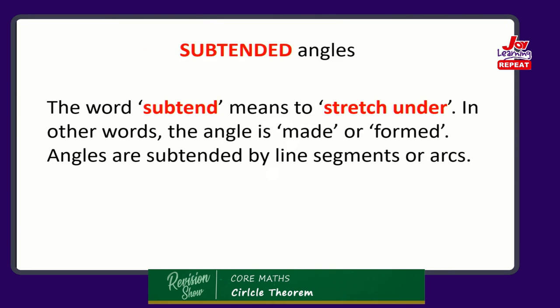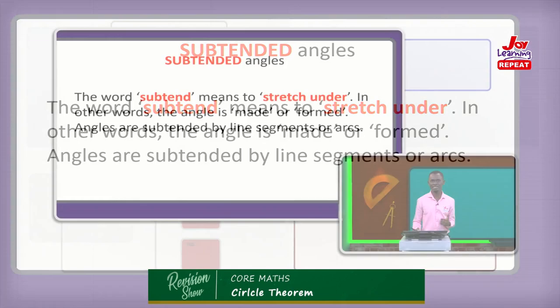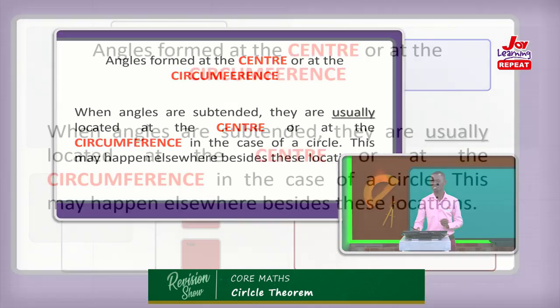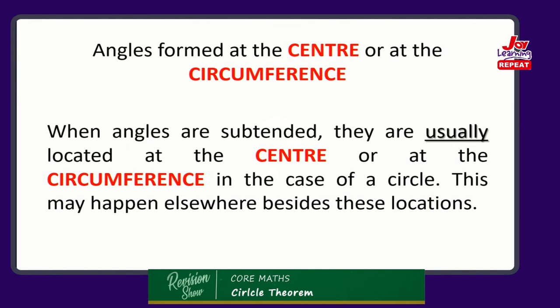A key concept to understand: you will meet the word 'subtend' or 'subtended'. It means to stretch under - I like to use the simple term 'made'. So the angle subtended simply means the angle made or formed. Angles are usually formed in circles by two things: by an arc and by a chord. Angles are either formed at the center or at the circumference - those are the two principal locations.